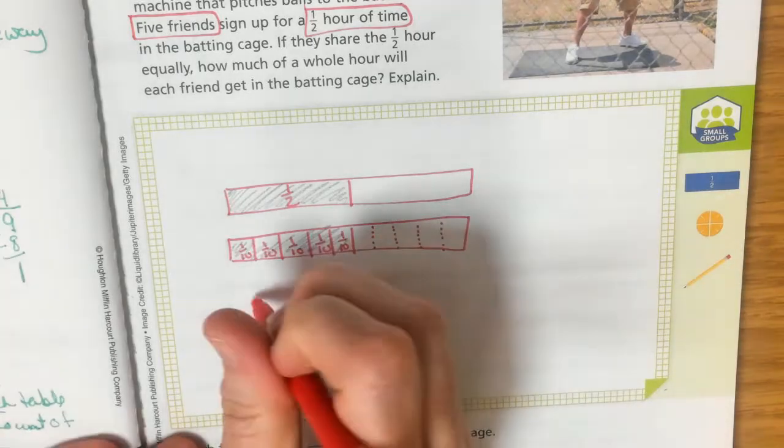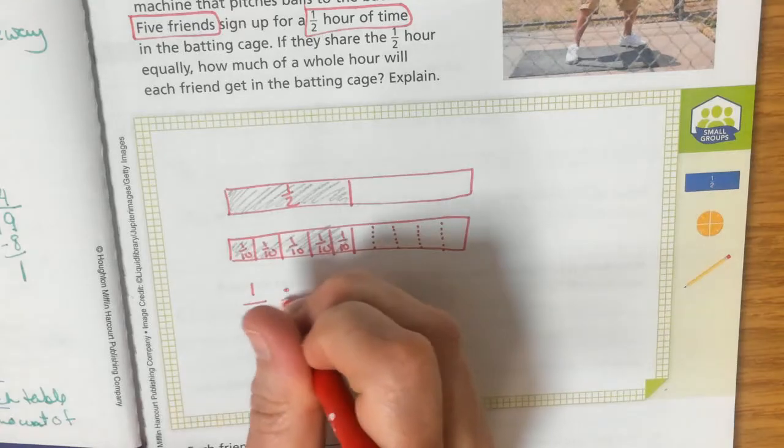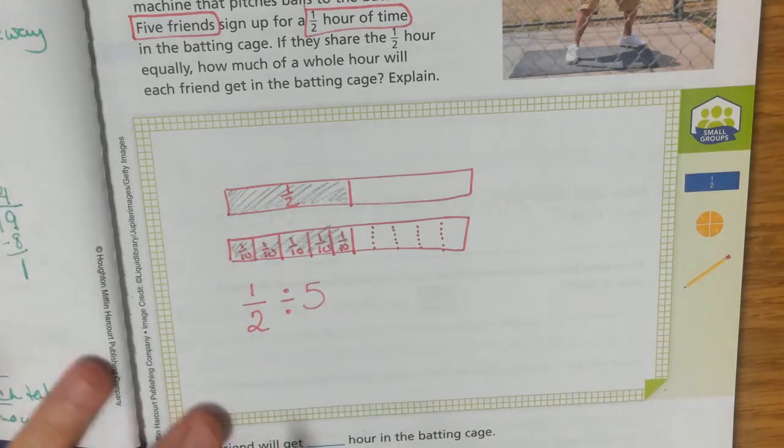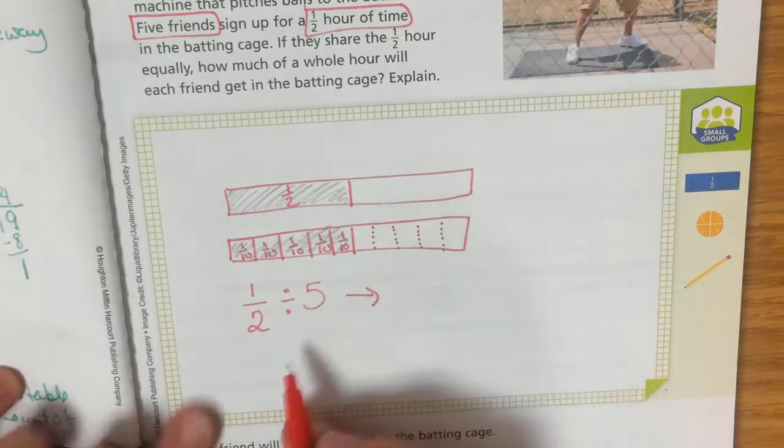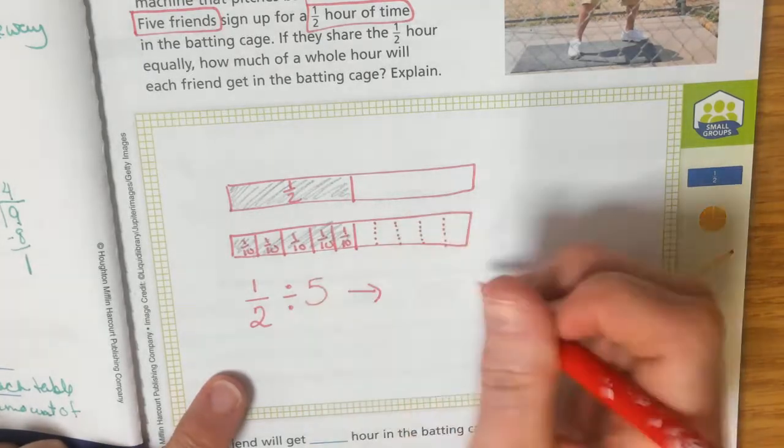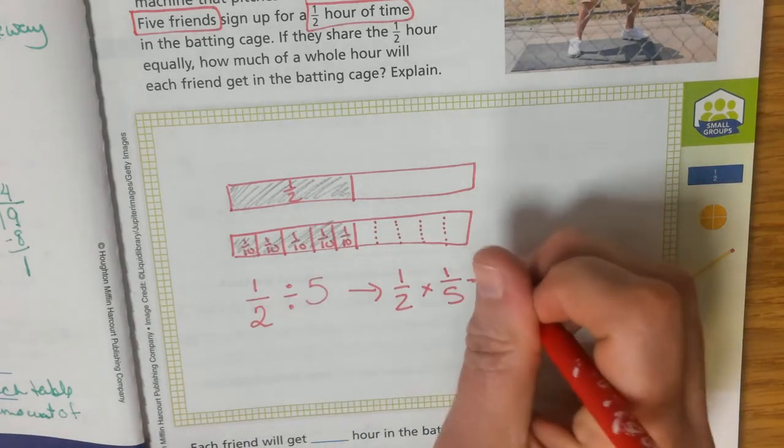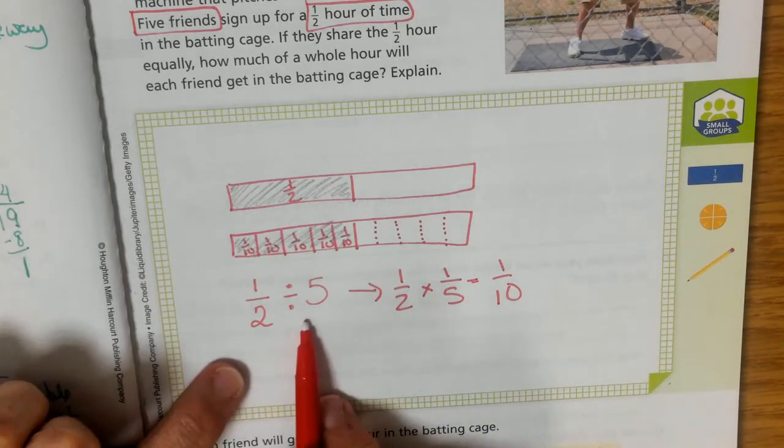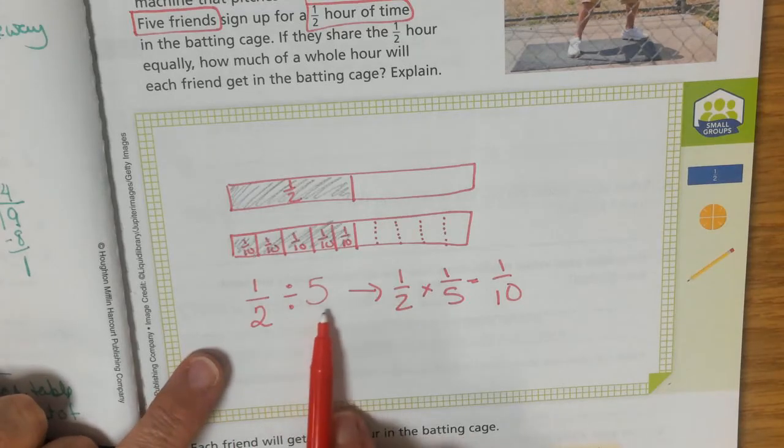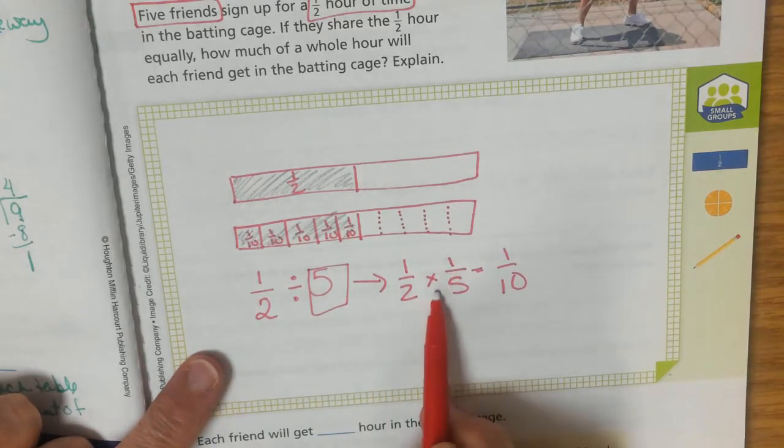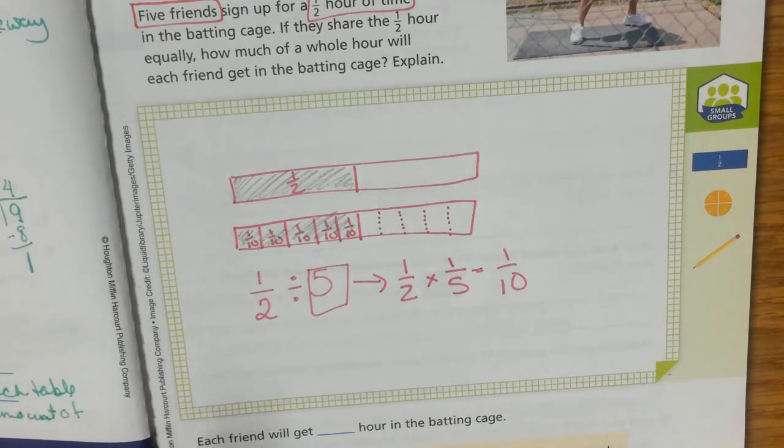We have one half divided by five kids. In order for this to work, we have to reverse this whole number. The way to make this work is we're going to take our five and make it one fifth. We're going to be multiplying one half times one fifth, and that's going to equal one tenth. When we divide, we take our whole number and we reverse it from five over one to one over five. Then we can multiply it by one half, and we will get one tenth.